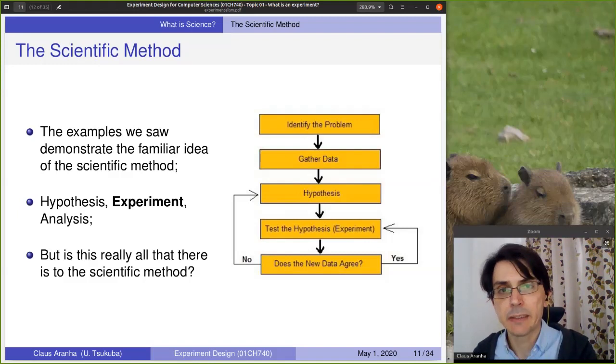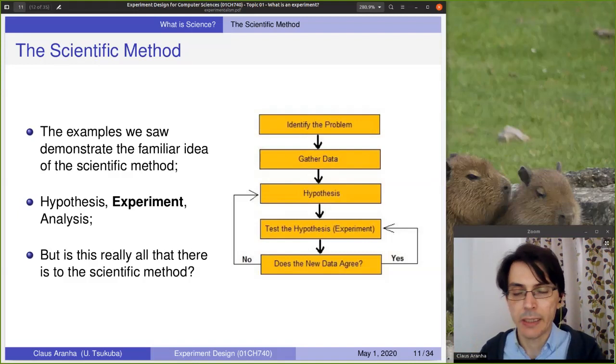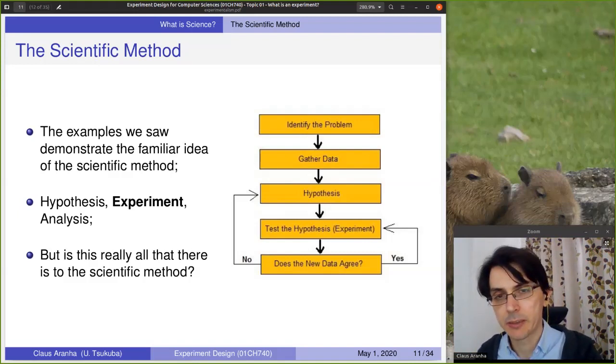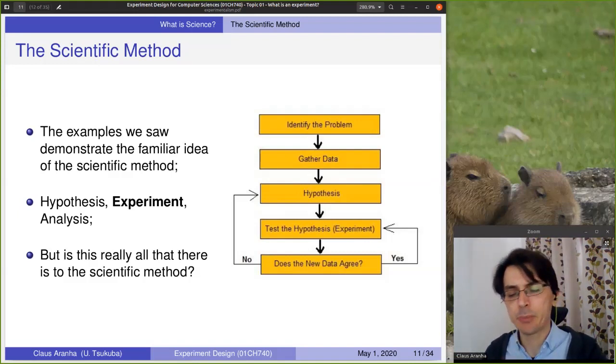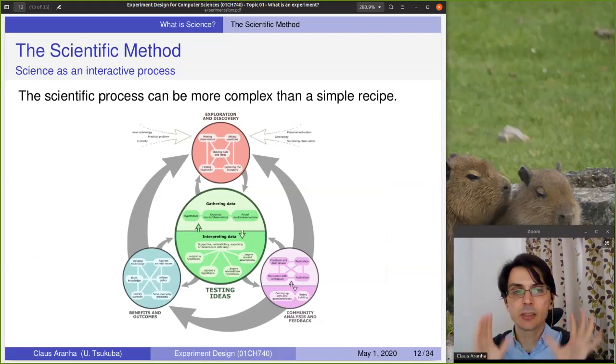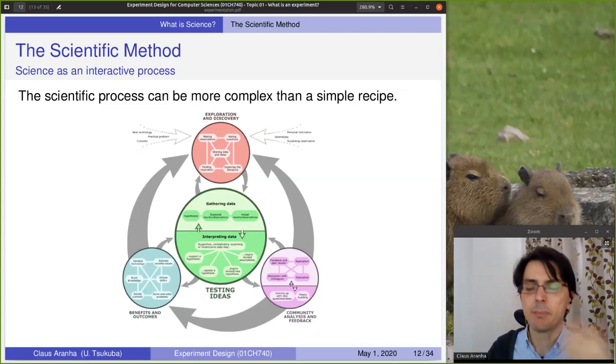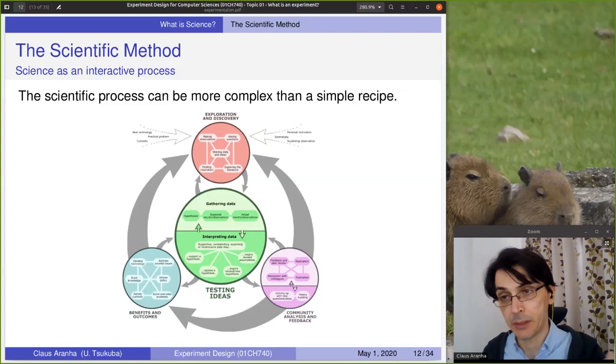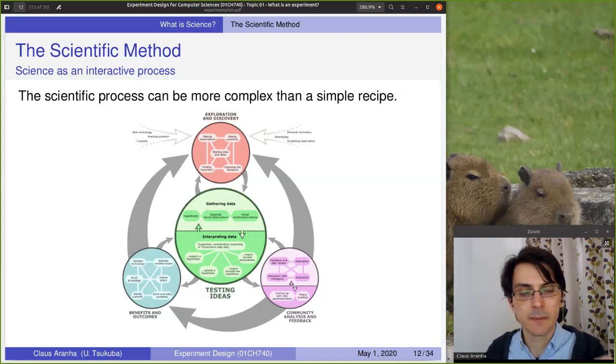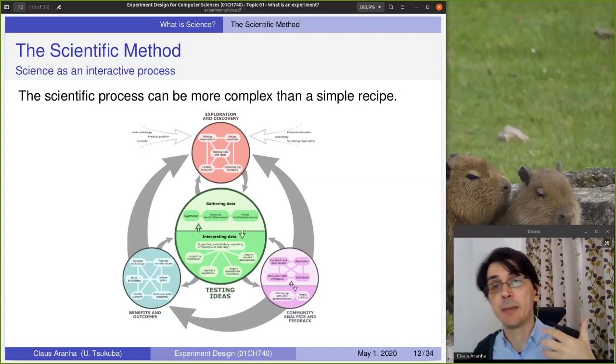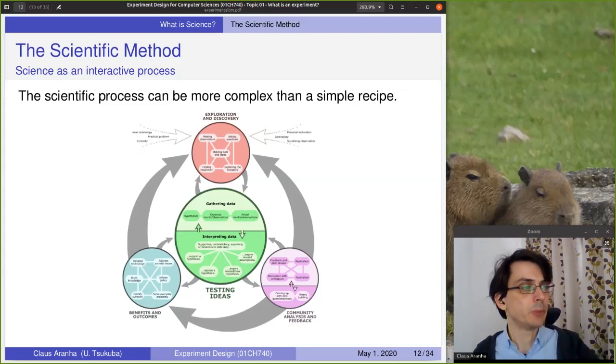If we think a little bit about this, though, this description of the scientific method is a little bit incomplete. Today, we think that science is not only hypothesis, experiment and analysis. Let's think a little bit about it. For instance, hypothesis. Where do the hypotheses come from? Where did James Lind come with the hypothesis that acidic substances would be good for scurvy? As we said before, some people believed that scurvy was a rotting of the body.